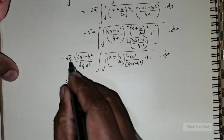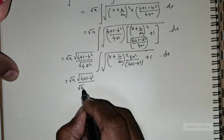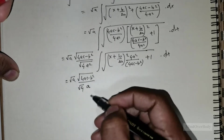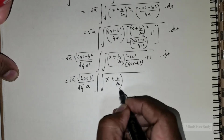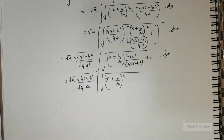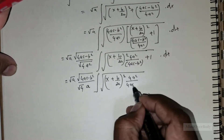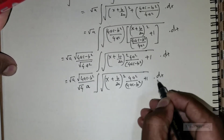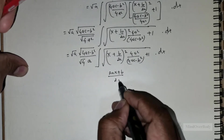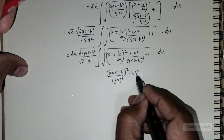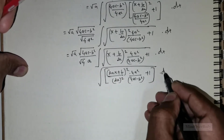Simplifying, this becomes √(4ac − b²) divided by √(4a²), times the integral of the square root of (x + b/(2a))² times 4a²/(4ac − b²) plus 1, times dx. This simplifies further to give us (2ax + b)/(2a), raised to the power 2, times 4a²/(4ac − b²) plus 1.